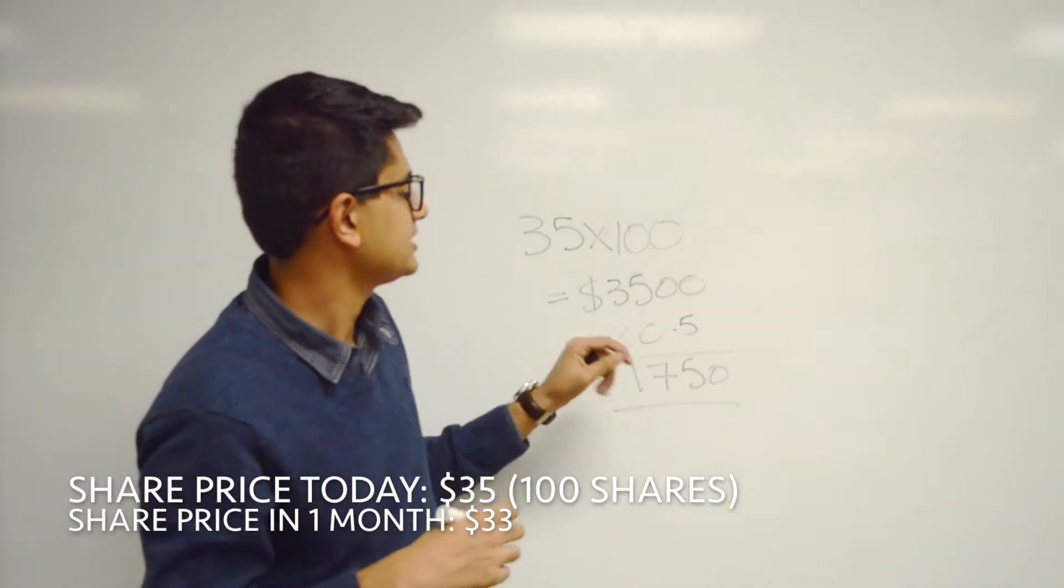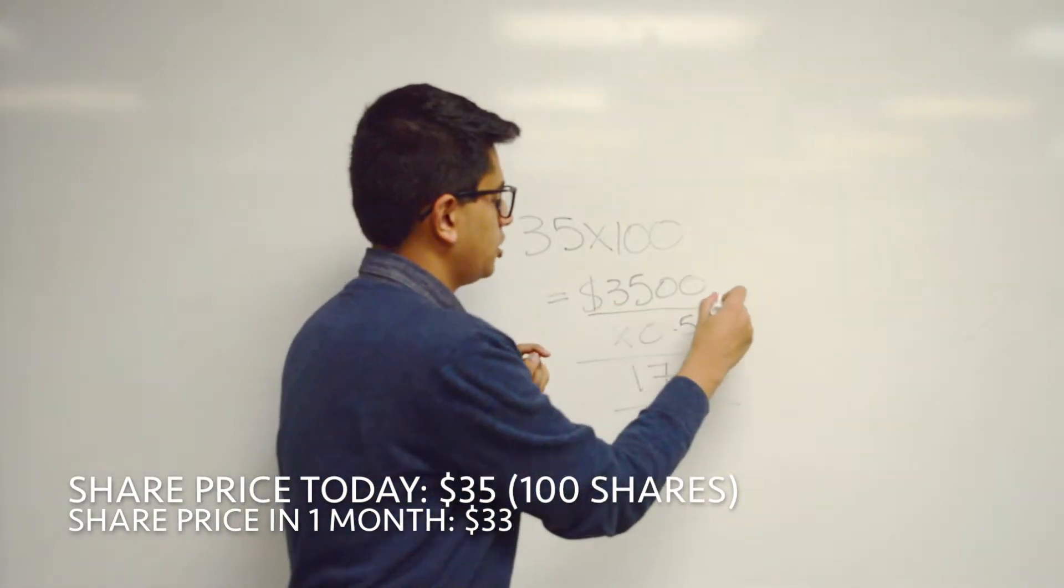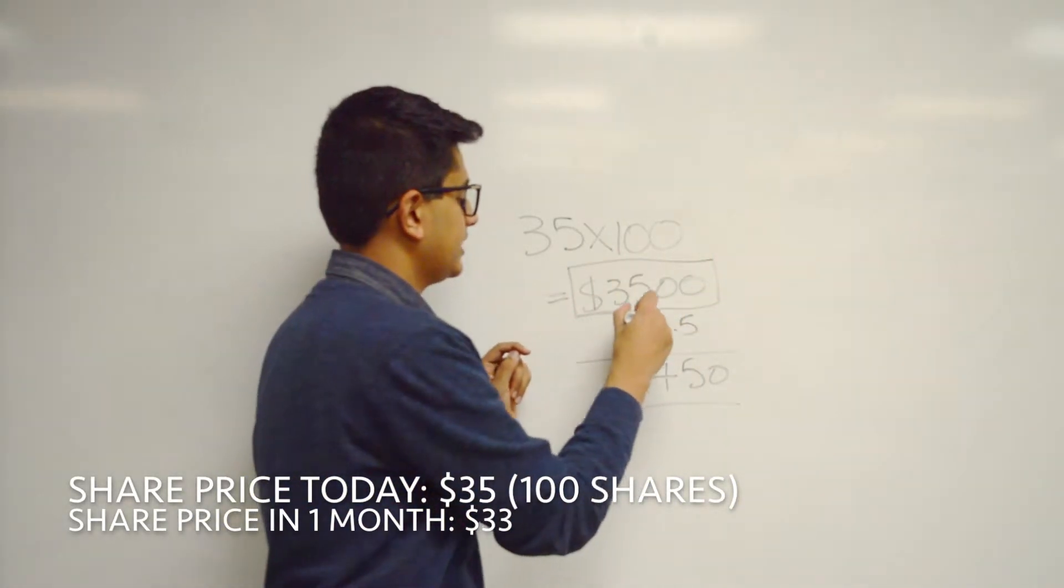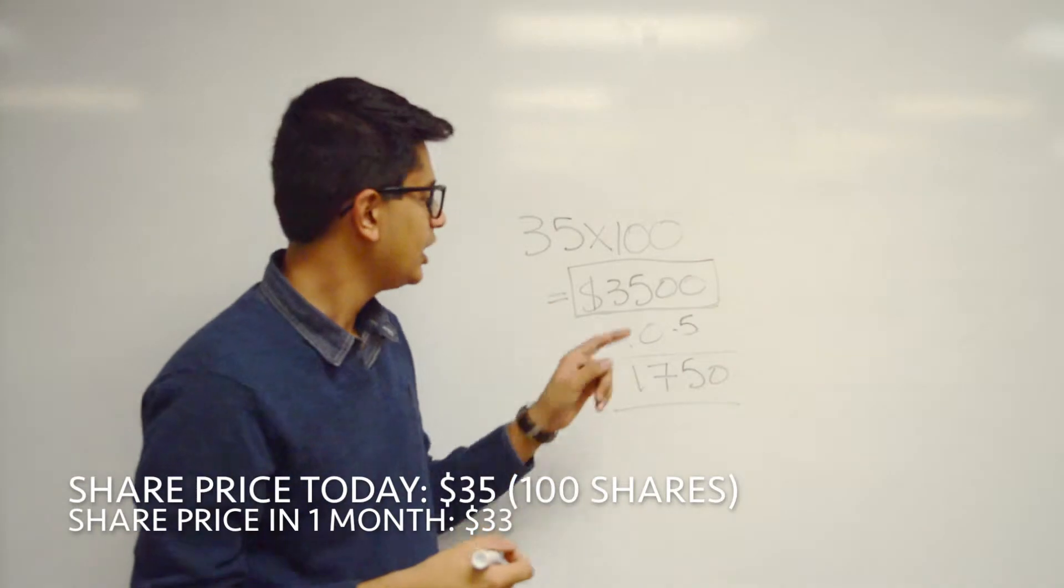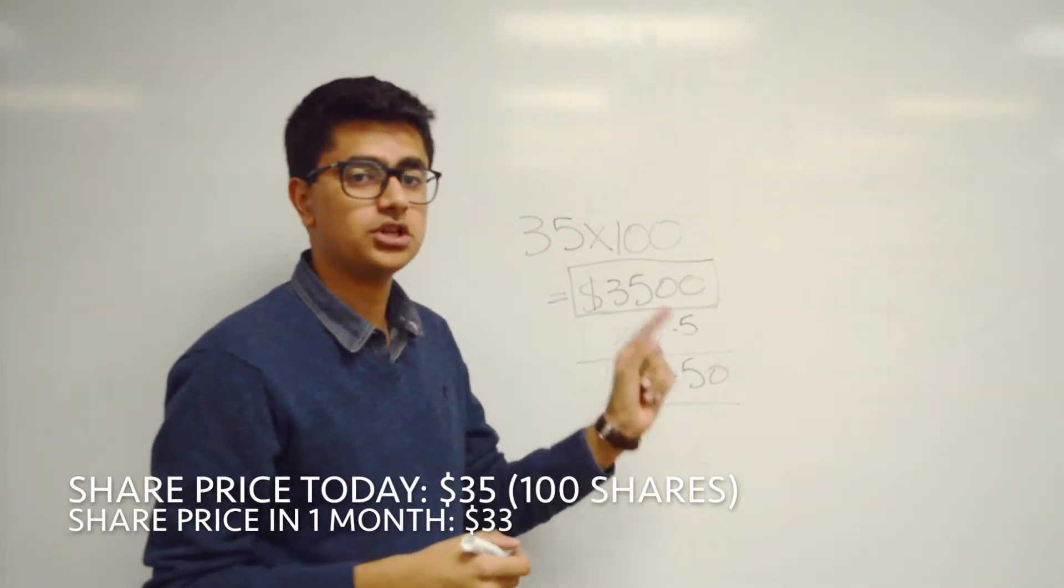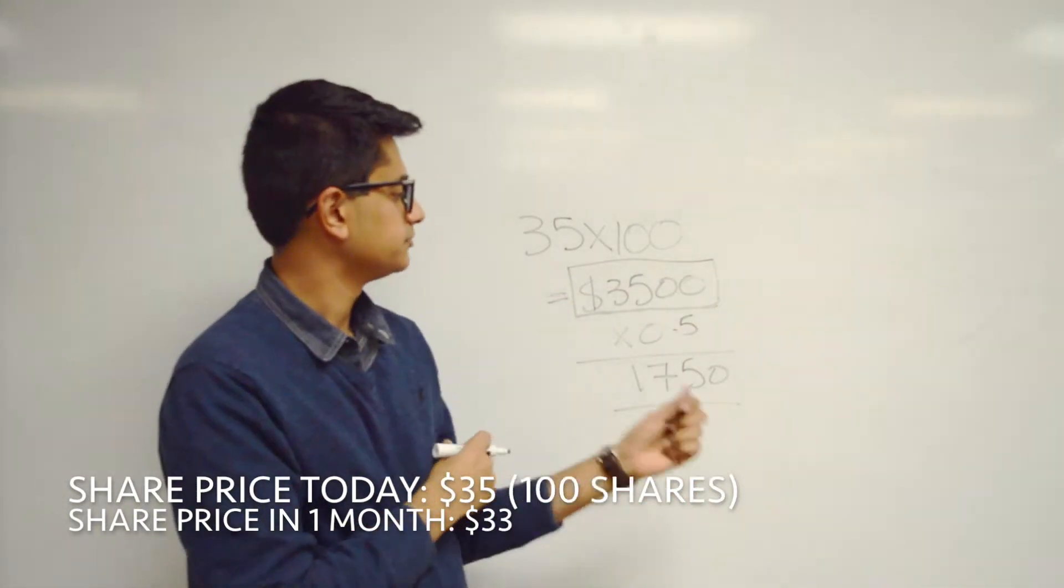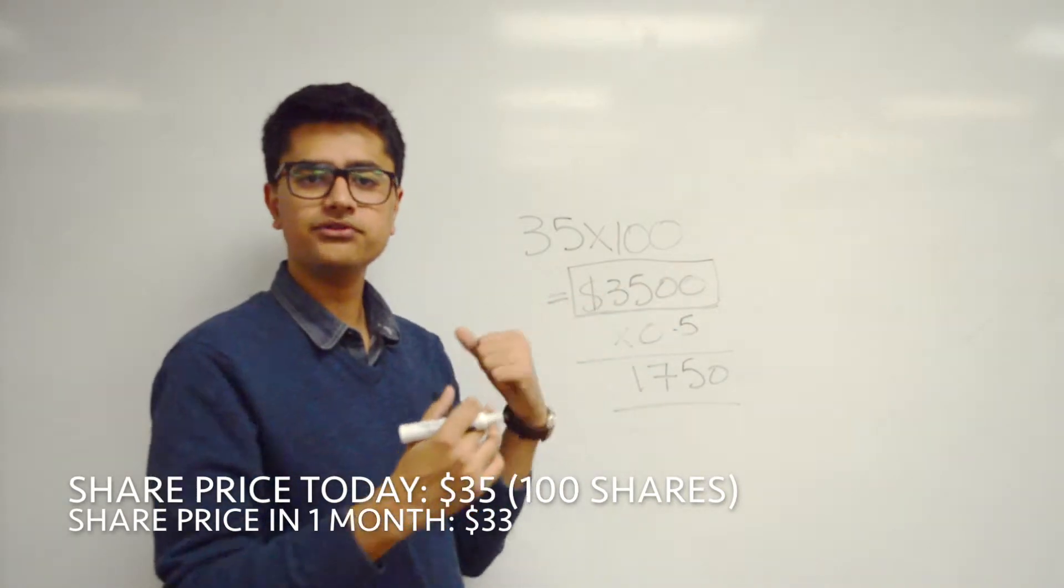So right now, ignoring this, we just told our broker to sell $3,500 worth of stocks and it was his stock. So right now, we made $3,500, perfect.